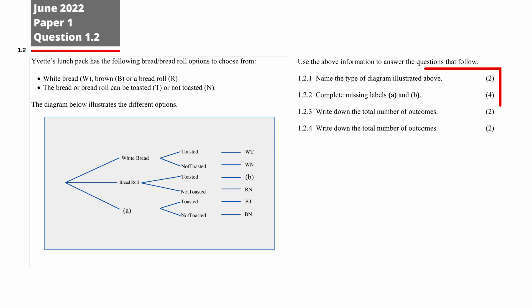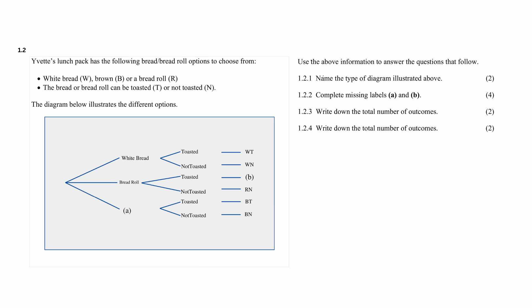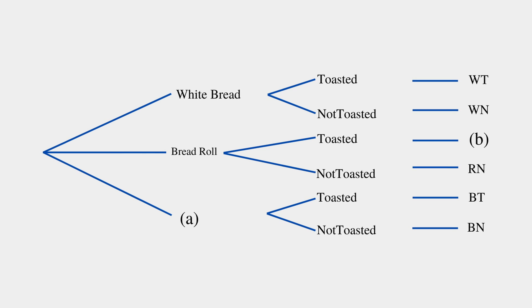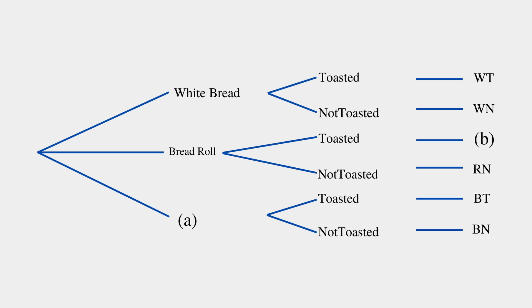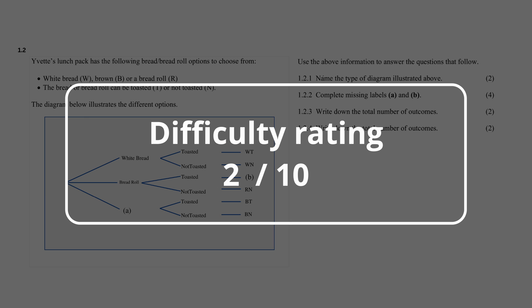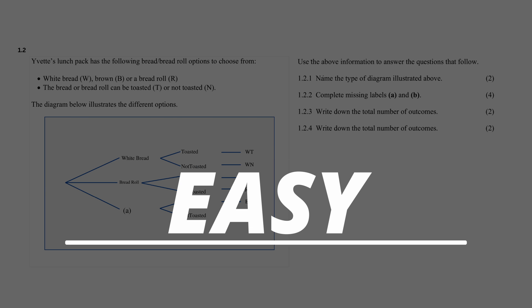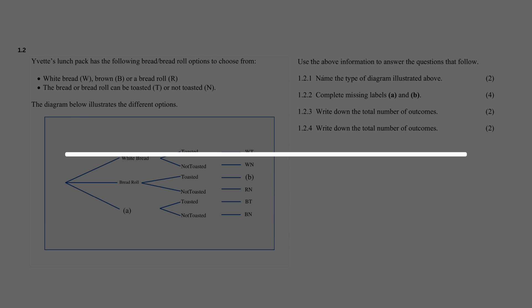Question 1.2 consists of four probability questions designed to assess your understanding of probability in the context of three diagrams. I give this question an overall difficulty rating of two out of ten. Let's take a look at this question in detail to see why.